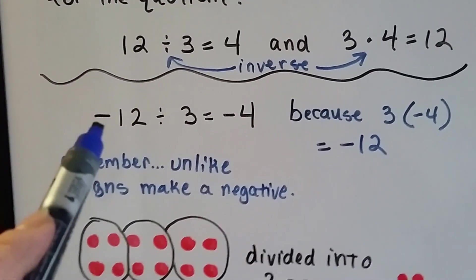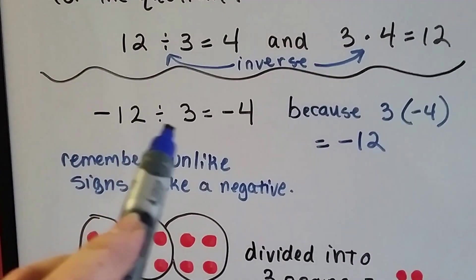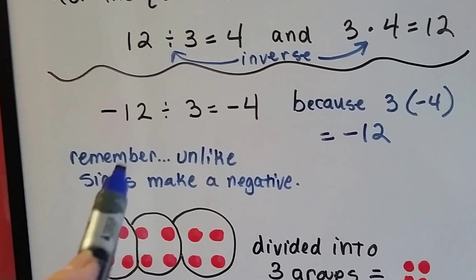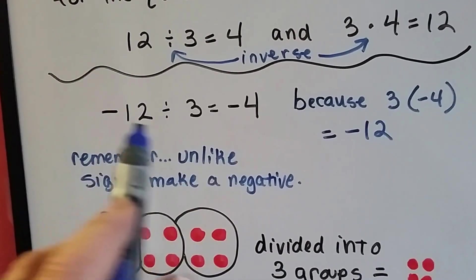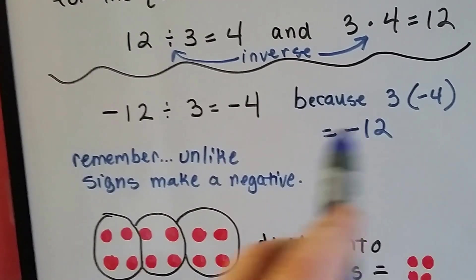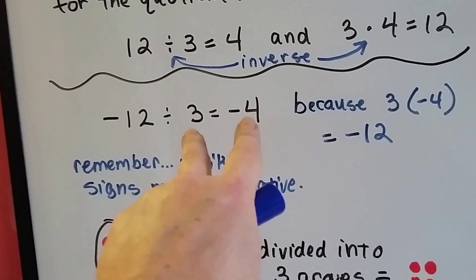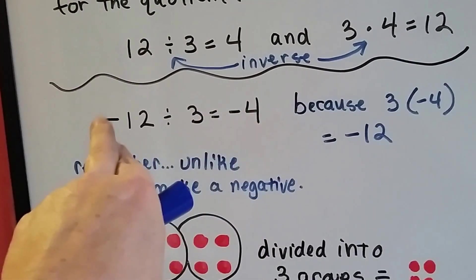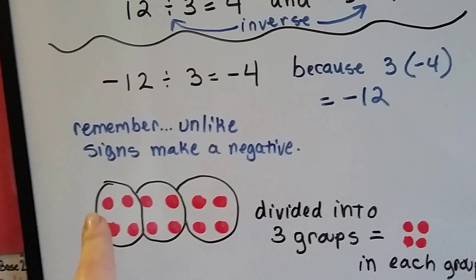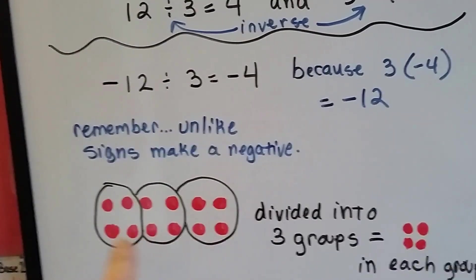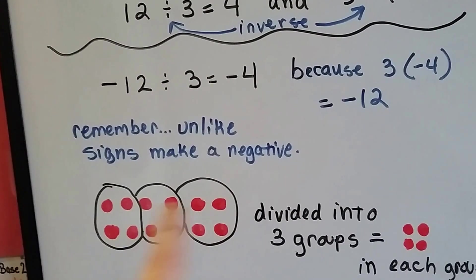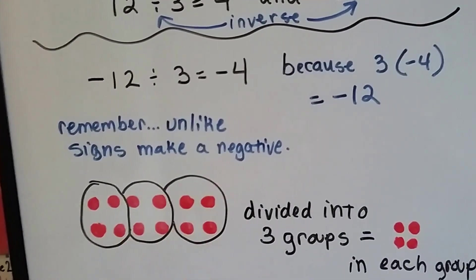So if I have negative 12 divided by 3 — that's a positive 3 — I'm going to get a negative 4. They're unlike. Unlike signs make a negative answer because positive 3 times negative 4 is negative 12. If I had 12 red negative chips and I broke that into three groups, there would be four red negative chips in each group.